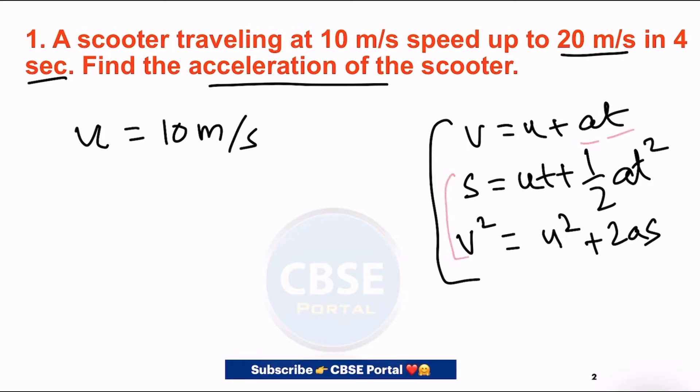In this question, the initial velocity is 10 meter per second. The scooter speeds up in 4 seconds, and its speed increases from 10 to 20 meter per second. So this means the final velocity is 20 meter per second.